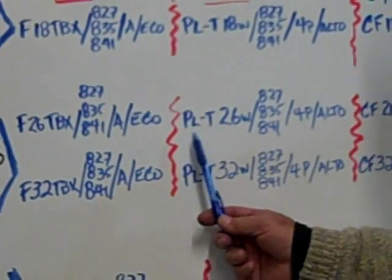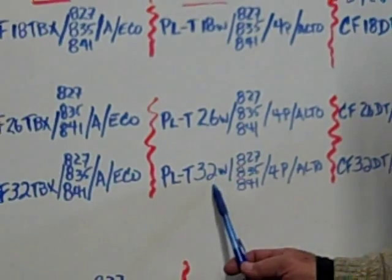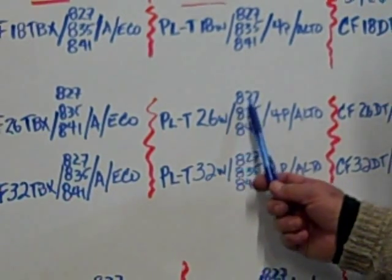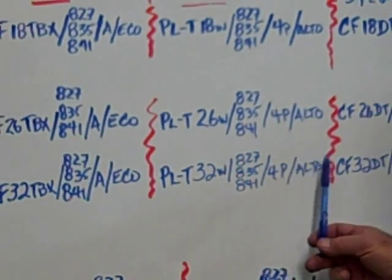Philips, their designation starts out with PL dash T for both wattages and then the color temperature slash 4p slash ALTO.